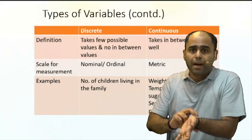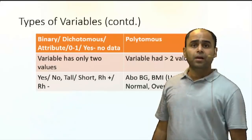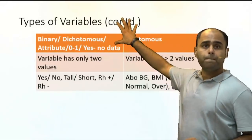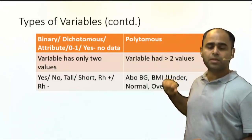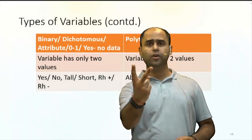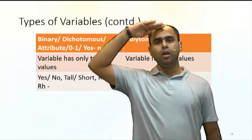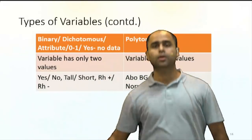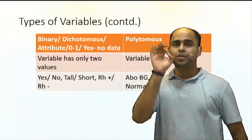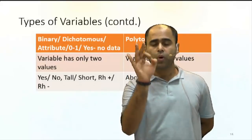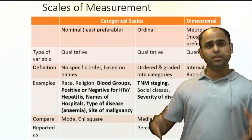Pulse rate is also discrete — you cannot have decimal values. The third classification is binary or dichotomous versus polytomous. Binary or dichotomous has only two answers: boy or girl. Polytomous has more than two answers: tall, intermediate, or short. These are the three classifications of variables, the most important being quantitative versus qualitative.